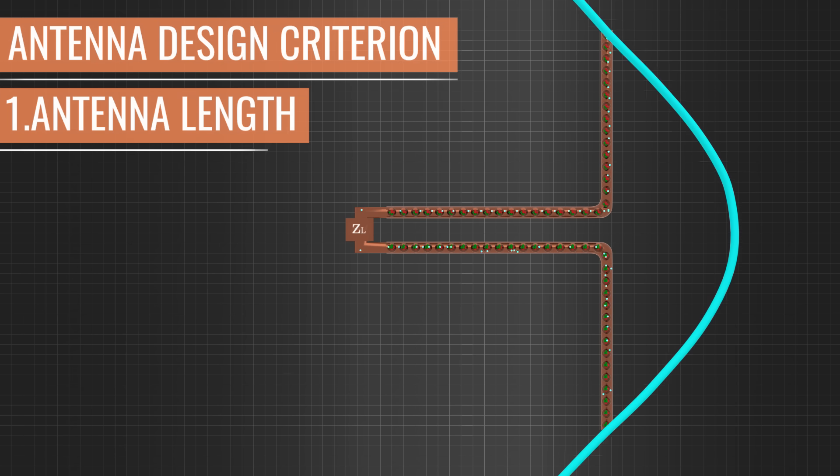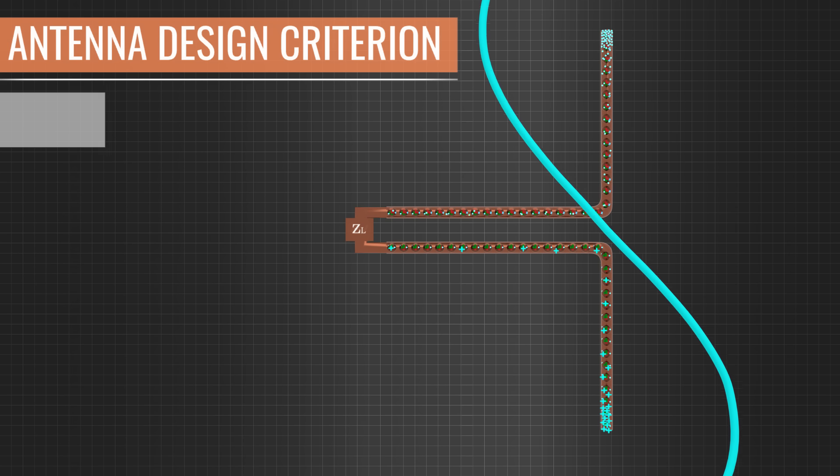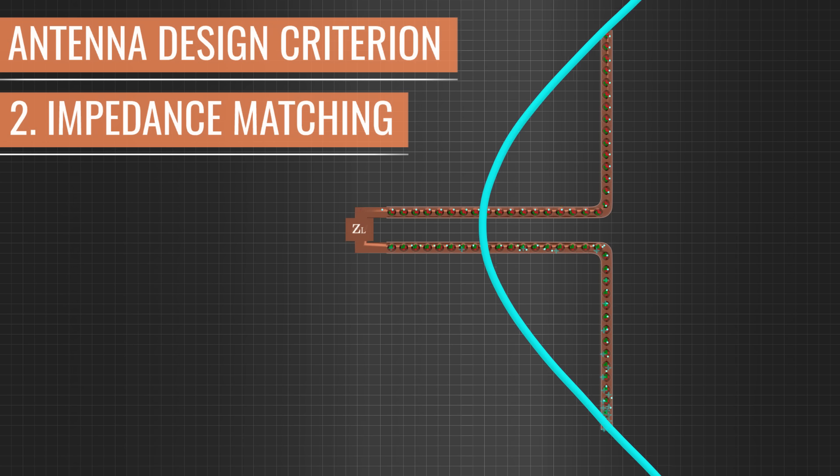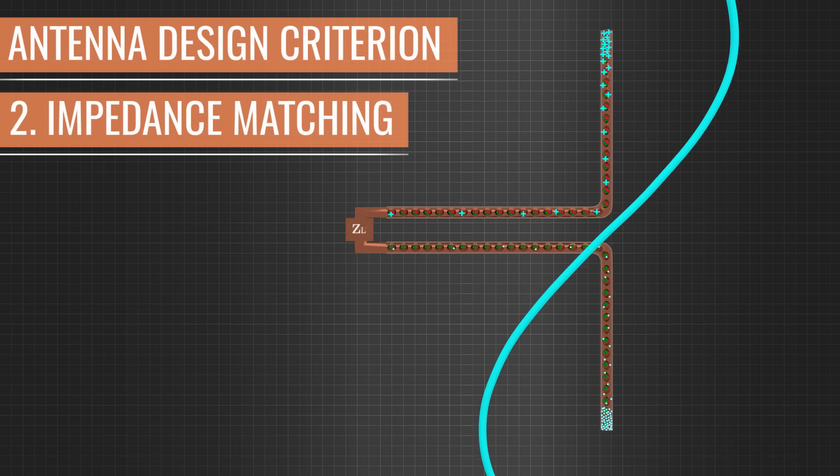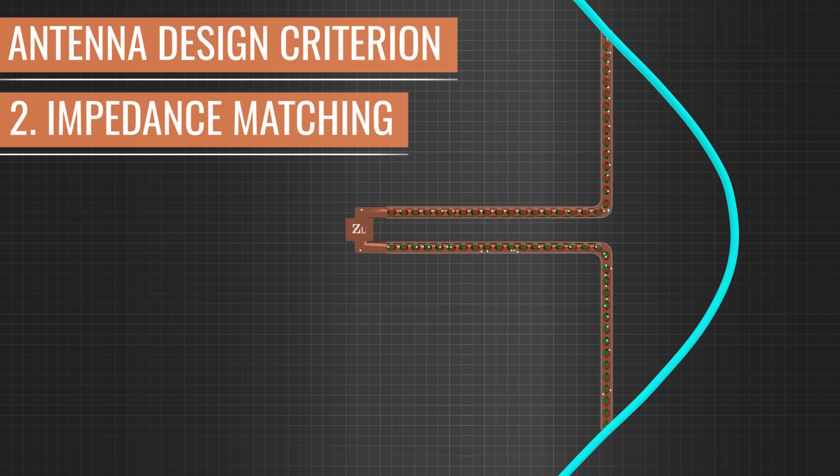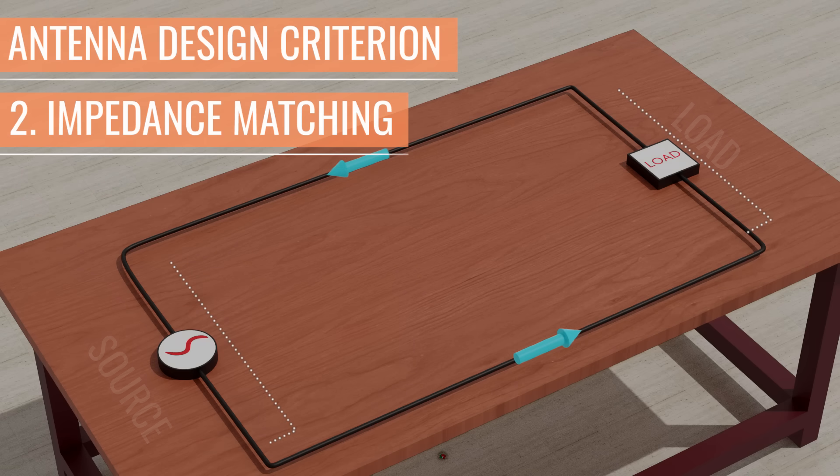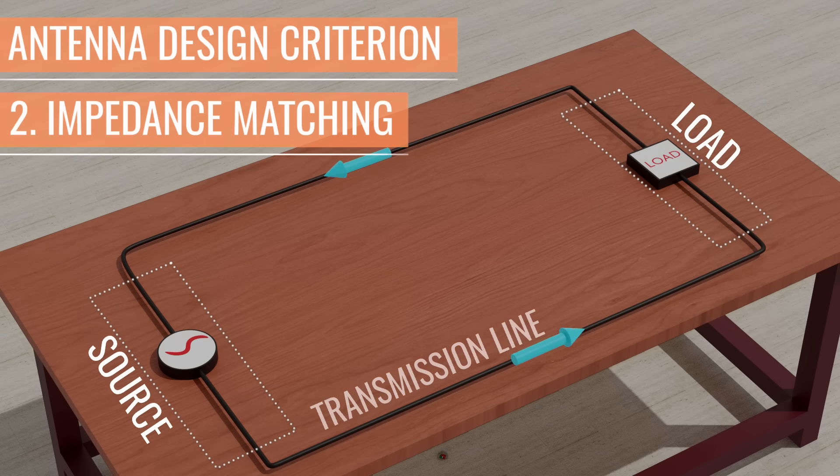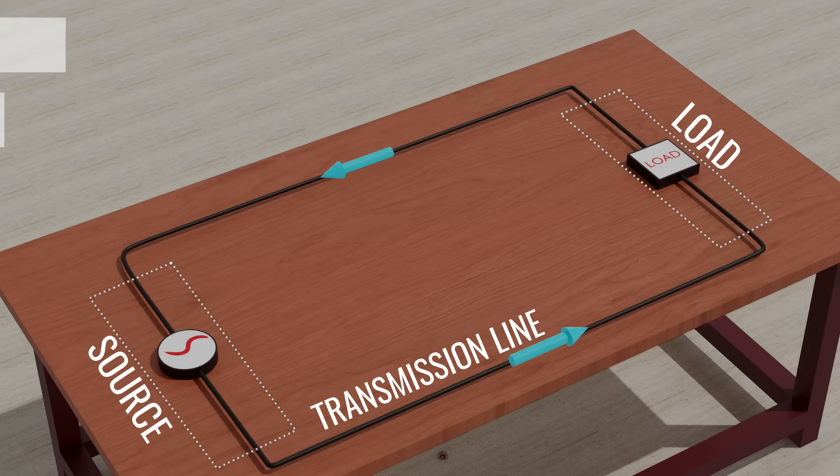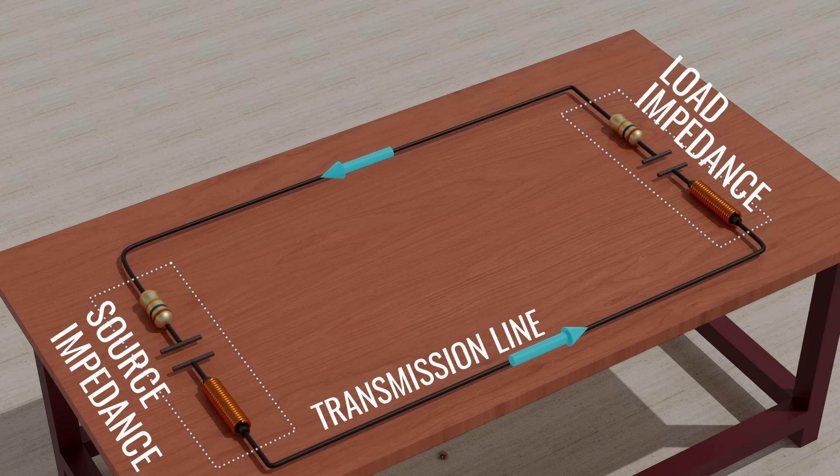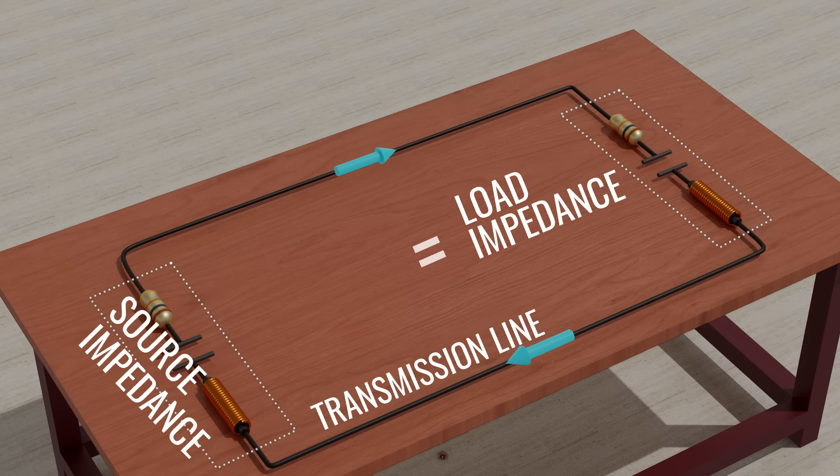The second most important design criterion is a term called impedance matching. Perfect impedance matching will make sure that the waves are radiated in the most efficient way. When an alternating current passes through a circuit, it faces opposition from the combined effects of resistance, inductance, and capacitance. This combined effect is known as impedance. According to the maximum power transfer theorem, to transfer the maximum amount of power, the load impedance should match with the source impedance.